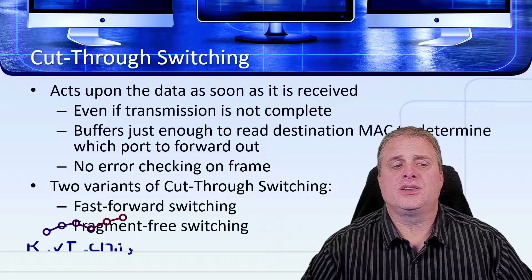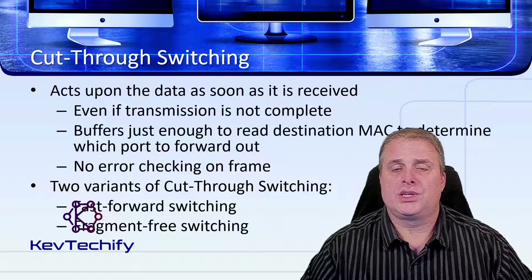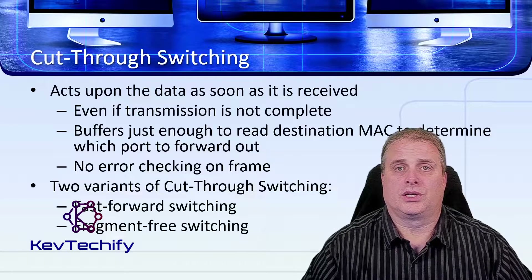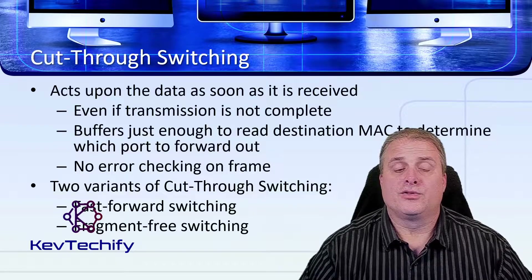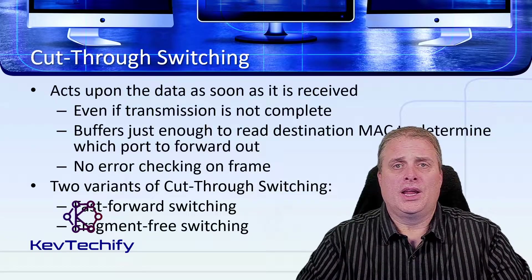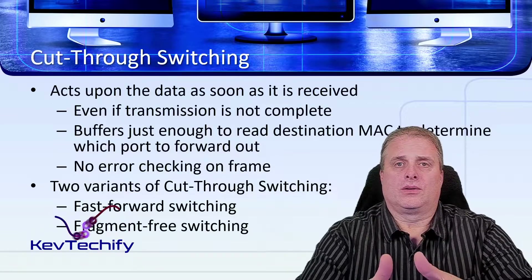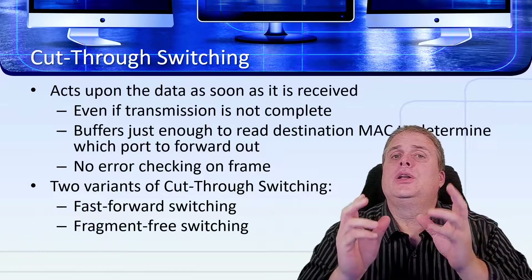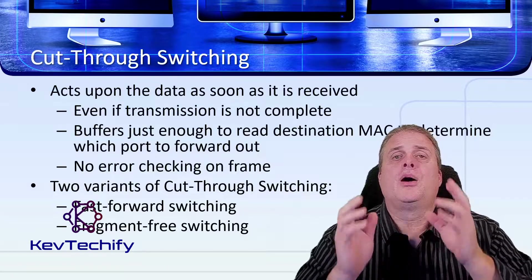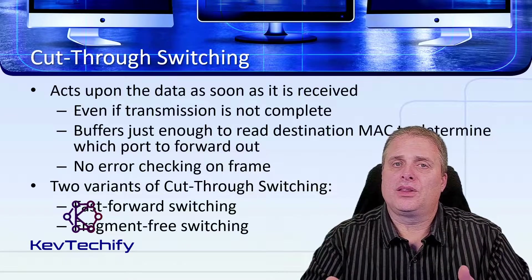There are two variants of cut-through switching. One is fast-forward switching and the other is fragment-free switching. Fast-forward switching is the fastest one — it gets that destination MAC address in and sends it out. However, it could send frames that have errors in them, propagating errors through your network and eating up your bandwidth.